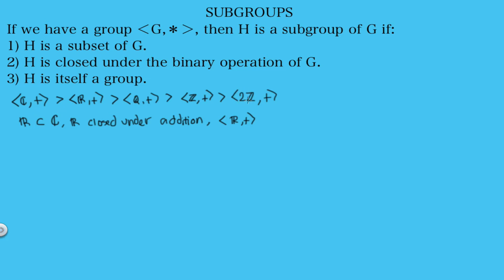We could have also written a three or a four there, and these would all be subgroups of the integers. One thing we couldn't say is that the rationals without zero with multiplication is a subgroup of ℂ — this is not a subgroup of the complex numbers with addition. The operation is different. Even though ℚ\ {0} is a subset of ℂ and forms a group under multiplication, it cannot be a subgroup here because the operation must match the original group's operation.